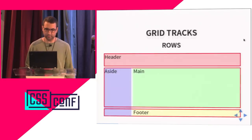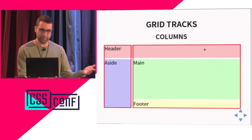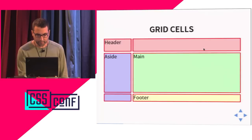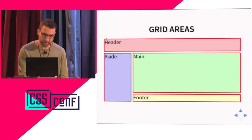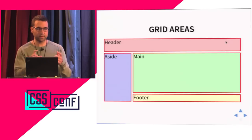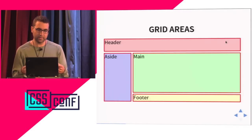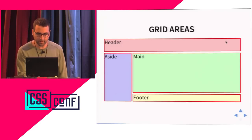Then we have grid tracks, which are both the rows and the columns — we call both things tracks, independently of direction. We have six cells in this grid, but we can also define named areas. For example, the first row completely could be an area that takes two columns, and I place items inside that area — I can place one, two, or several items inside that area, not specifically in a single cell.